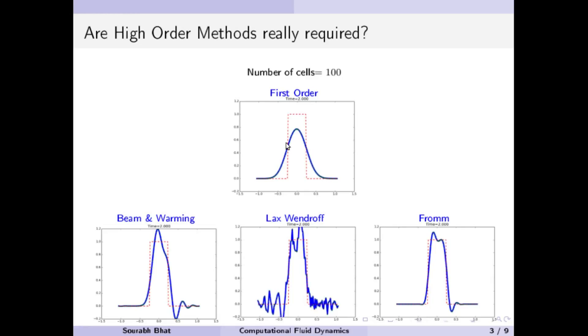We have seen that first order methods give highly diffused solutions. Here I have used number of cells as 100. It gives a highly diffused solution, however it is at least pretty much well-behaved.